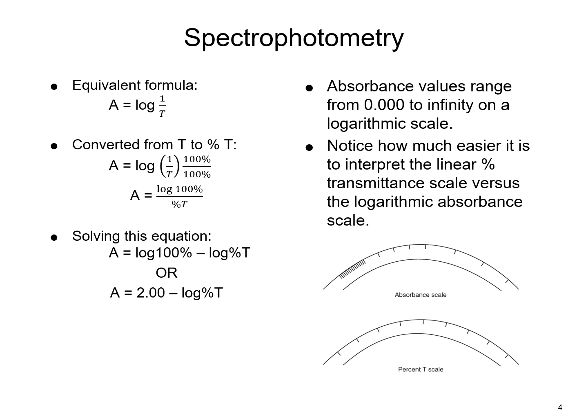In contrast to transmittance ratio, absorbance values range from 0.000 to infinity on a logarithmic scale. You can see from the meters that it is much easier to interpret something on a linear scale for percent transmittance versus a logarithmic absorbance scale. By convention, absorbance values are reported to the third decimal place, such as 0.000, whereas percent transmittance values are reported to the nearest tenth as a percentage.